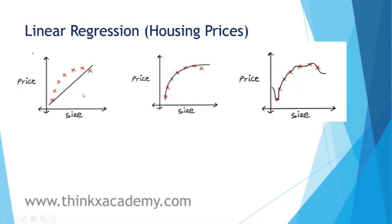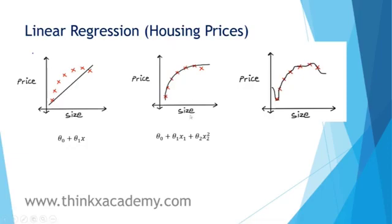In the first case, the hypothesis function is theta zero plus theta one times x, which means it is a linear function. This type of hypothesis function is not a good fit for the dataset, so we call this first example 'underfit.' In the second graph, we have a quadratic term with x squared — it's not linear regression anymore, and this curve tries to pass through most of the data points.